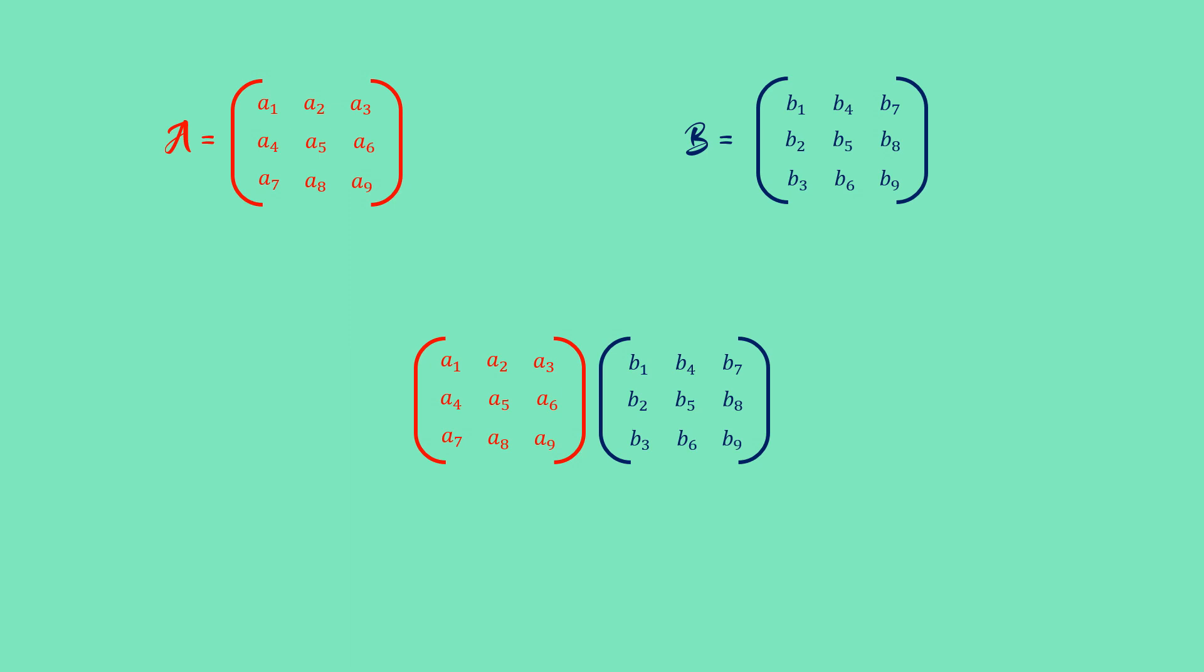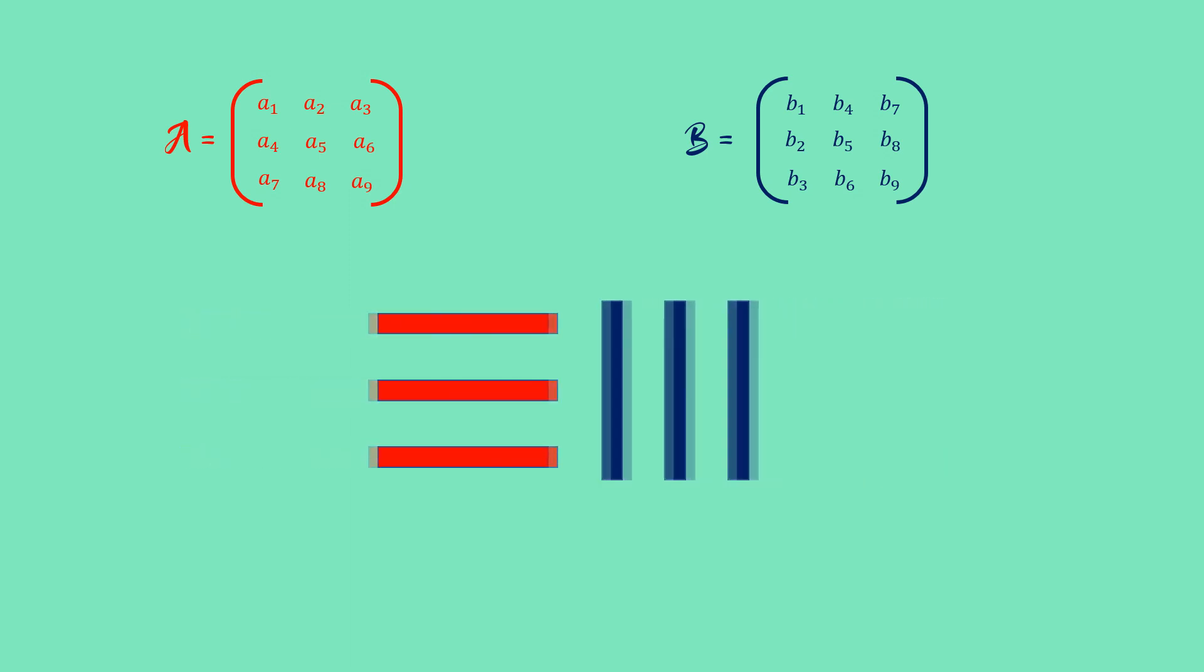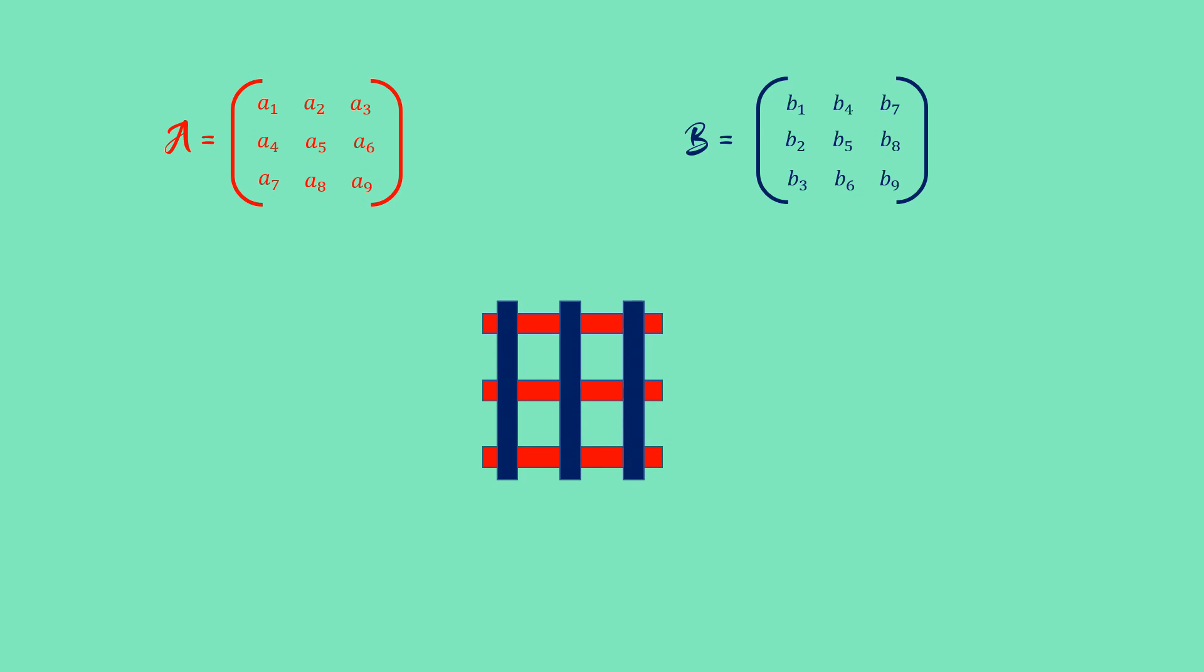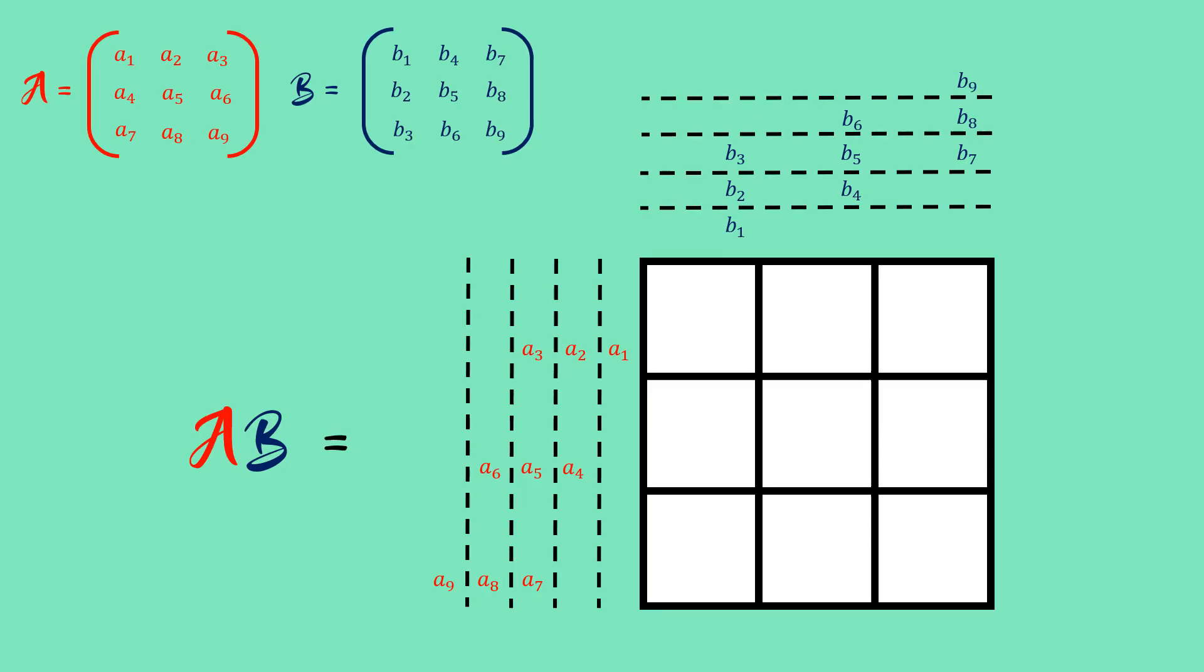I will multiply the two matrices A and B together. Since we are multiplying the columns of B with the rows of A, I have labeled the elements of A in row major order and the elements of B in column major order.